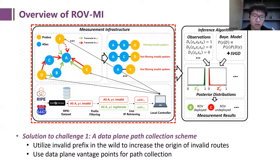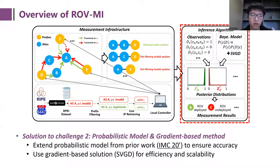In terms of Challenge 1, we propose a data plane path collection scheme. We first utilize the invalid prefix in the wild to increase the origin of invalid routes, and then use data plane vantage points to make more observations. To solve Challenge 2, we combine probabilistic modeling and gradient-based methods for accurate and efficient inference. We first extend the probabilistic modeling method from prior work to ensure accuracy, and perform efficient and scalable solution by introducing gradient-based algorithms.